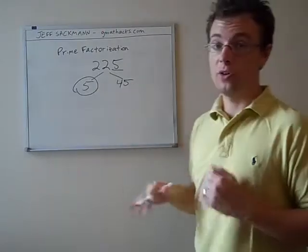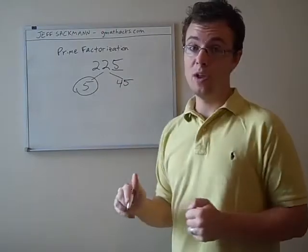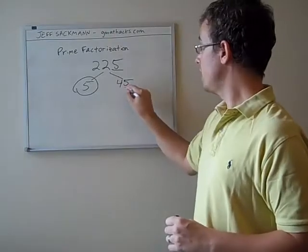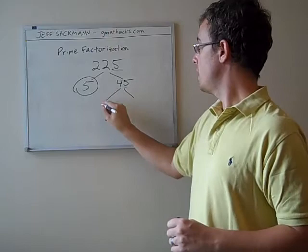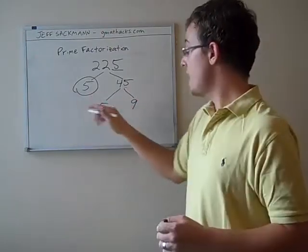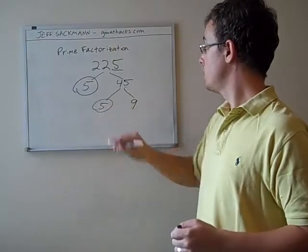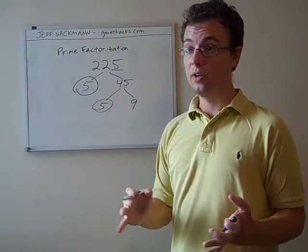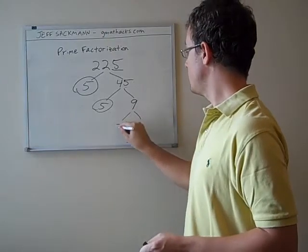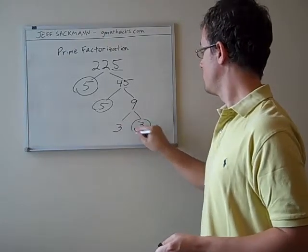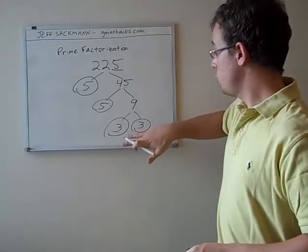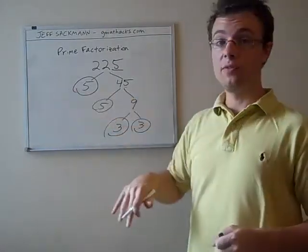45, on the other hand, is not a prime number. What is 45 divisible by? Again, you're ending with a 5, so we can break it down into 5 and 9. 5, as we know, is a prime. 9 is not a prime. You probably know what 9 is divisible by—9 is made up of 3 and 3. 3 is prime, so we can circle those two.